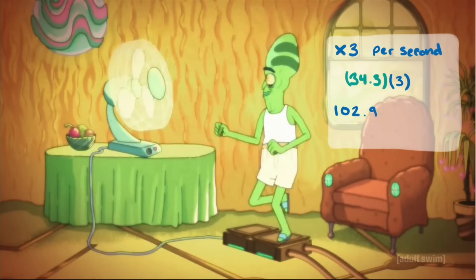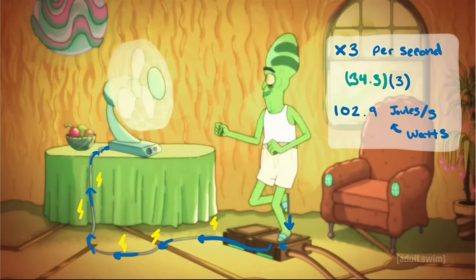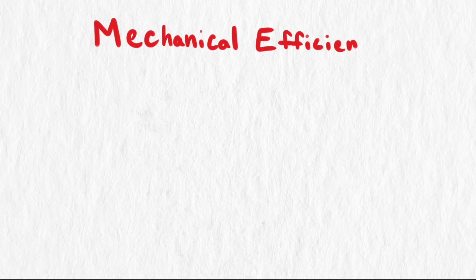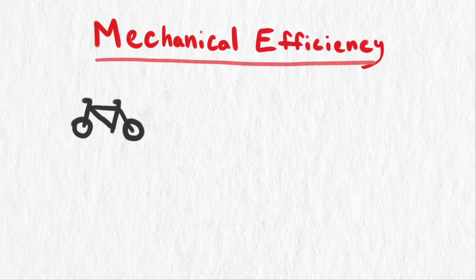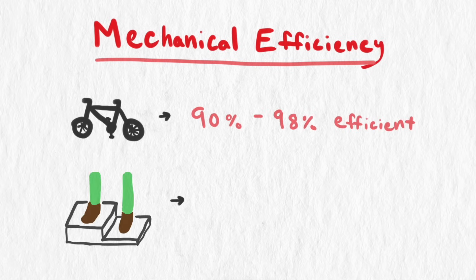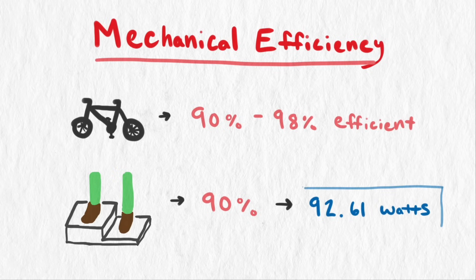Taking three steps per second, that's 102.9 joules per second, or 102.9 watts of power. How much of that kinetic energy does the step machine actually turn into electricity? The ratio between the power delivered to a system and the power that the system outputs is called mechanical efficiency. For reference, bikes range from 90 to 98%. Let's assume the stepper has a 90% mechanical efficiency, therefore generating 92.61 watts per alien.